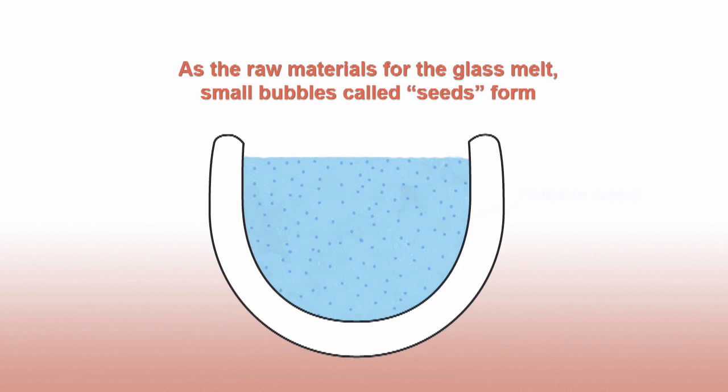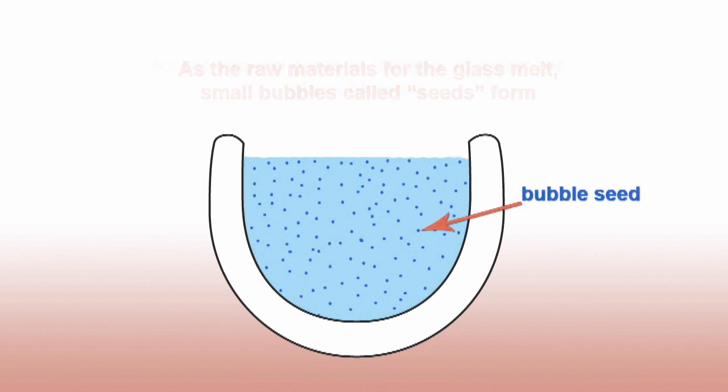Once the melt cycle is completed, the furnace temperature is lowered to 2000 degrees. This is the temperature we blow glass at.